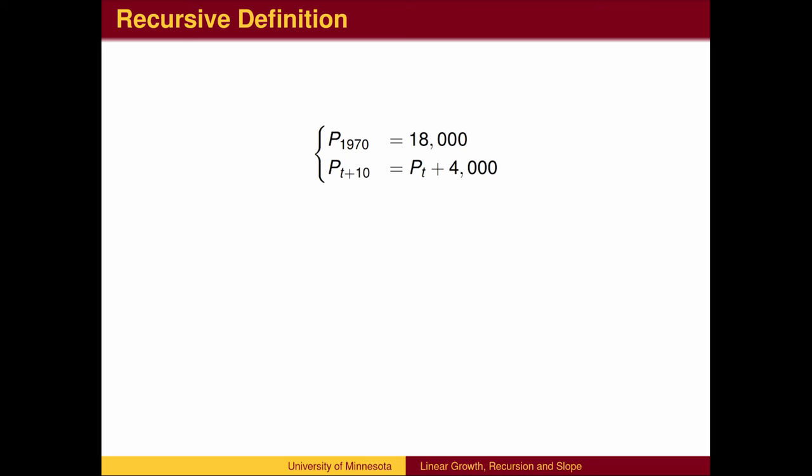We need one equation which specifies the starting condition, in this case the population in 1970, and a second equation that tells us how to calculate the population after 1970.